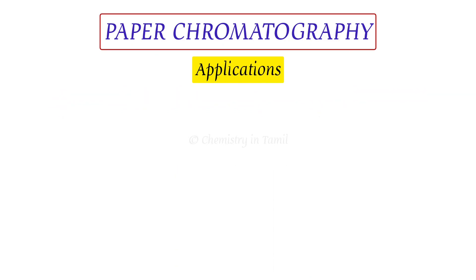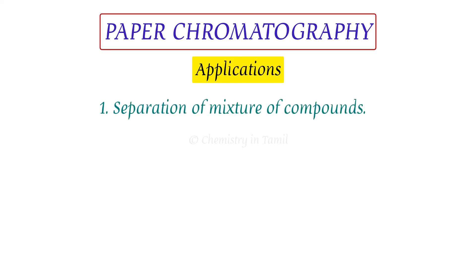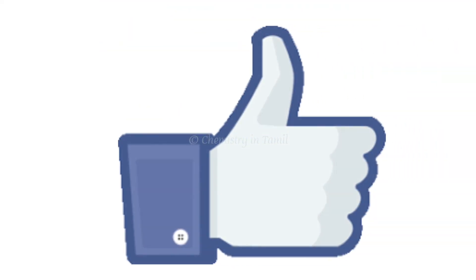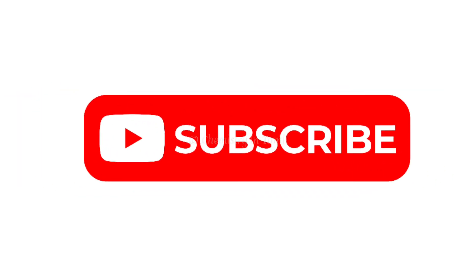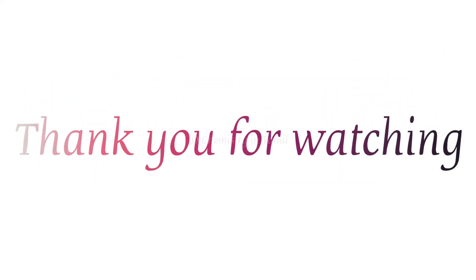Those are the procedures for paper chromatography. The applications include separating mixtures of compounds such as plant extracts, chemicals, and their combinations based on affinity, solubility, and partition — this is paper chromatography. If you liked this video, please like, share, and comment below, and subscribe to the Chemistry in Tamil channel. Thank you for watching.